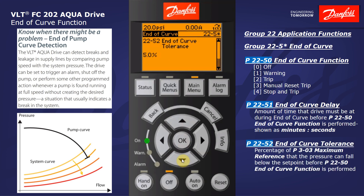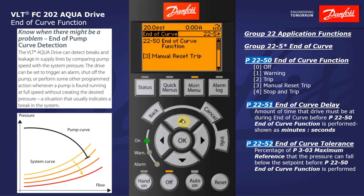Finally we have the end of curve tolerance. This parameter determines the percentage from set point that you're able to fall prior to the end of curve. End of curve is defined as the drive running at full speed and X amount below your set point. That percentage is entered as a percentage of parameter 303, maximum reference or set point. My maximum reference right now is set to 100 psi, so 5% of 100 psi is 5 psi. When I fall 5 psi below my 20 psi set point for 10 seconds, the drive will trip and only be reset manually.